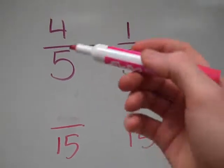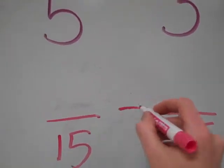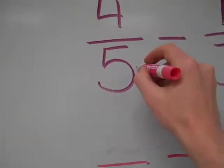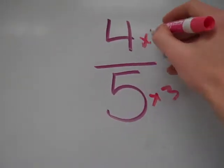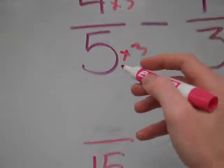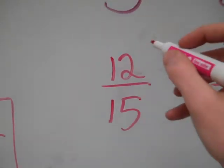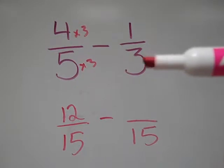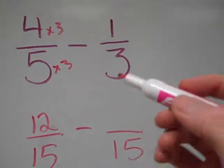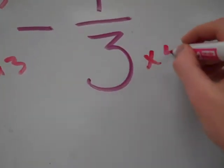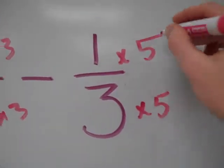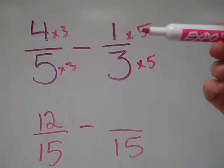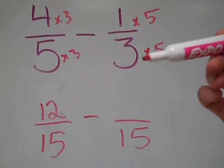I'm going to change both of these to be over 15s and then subtract. So 5 in order to become 15 needs to be times by 3. So I'll multiply the top by 3, and 4 times 3 is 12. So there's my first equivalent fraction. And then in order to make 3 into 15, I have to do times 5. And whatever I do the denominator, I have to do the numerator in order to keep it equivalent. So 1 times 5 is 5.